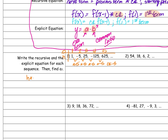What number do I multiply by negative 5 to get an answer of 1? I divide 1 by negative 5, so the zeroth term is negative one fifth. Taking 1 divided by negative 5 gives me negative one fifth.